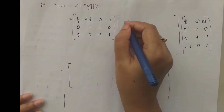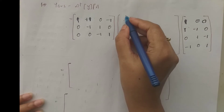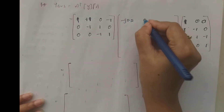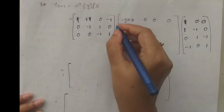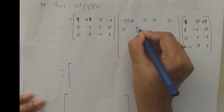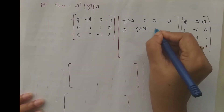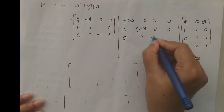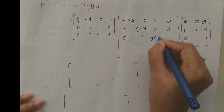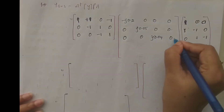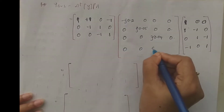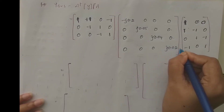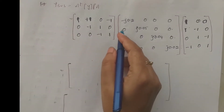Matrix Y is the diagonal primitive admittance matrix with entries -j0.2, j0.5, j0.04, j0.02 on the diagonal and zeros elsewhere. Multiplying A^T * Y * A we proceed element by element.